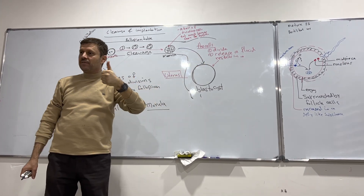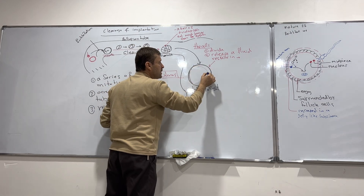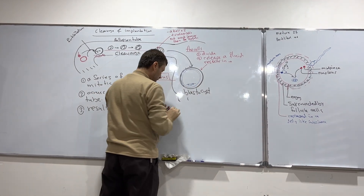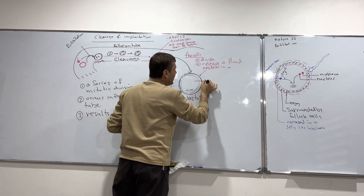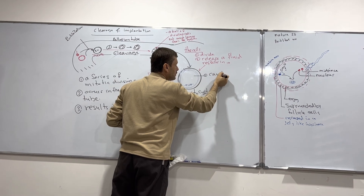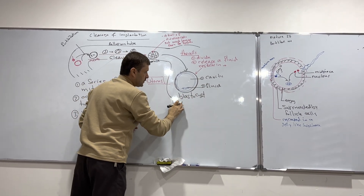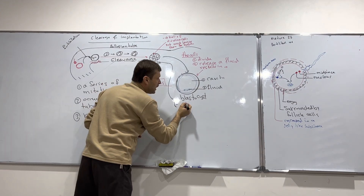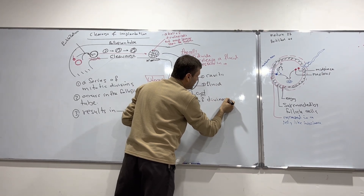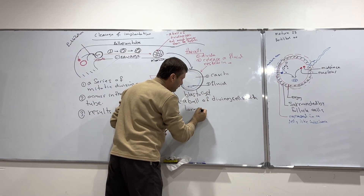The blastocyst is also a ball of dividing cells. It contains fluid. So you can say the blastocyst is a ball of dividing cells with a large fluid-filled cavity.